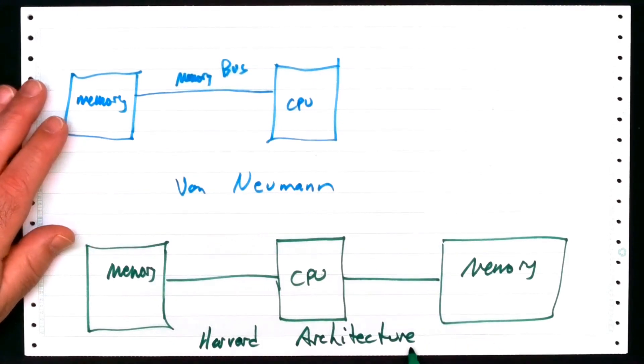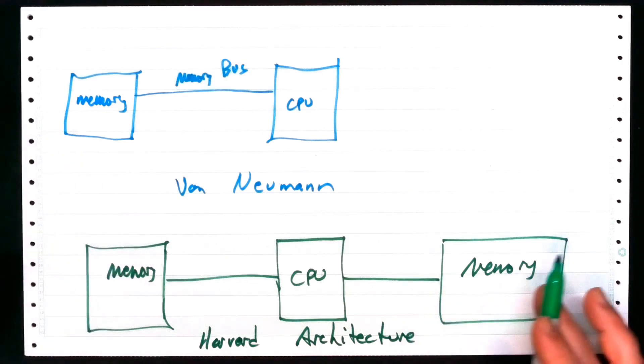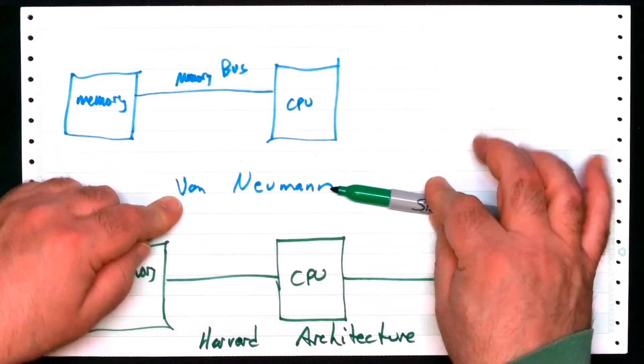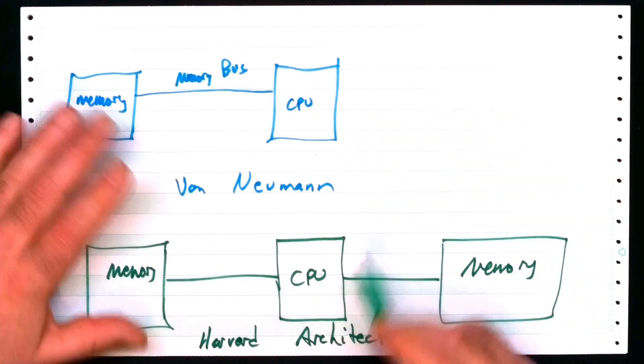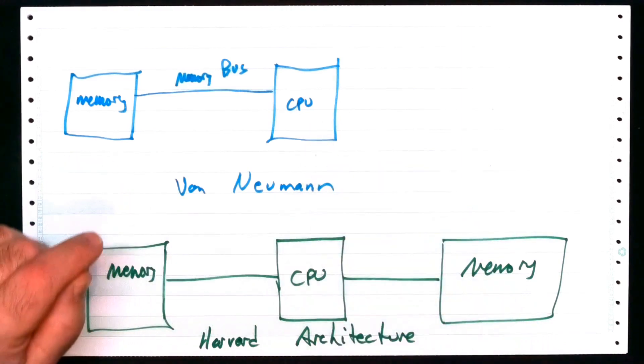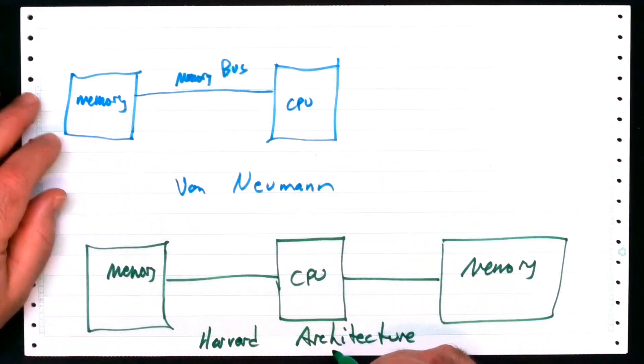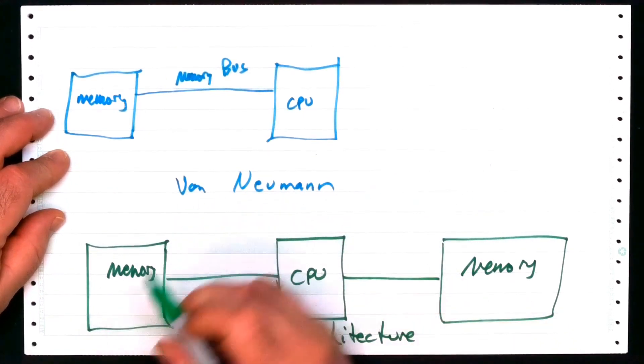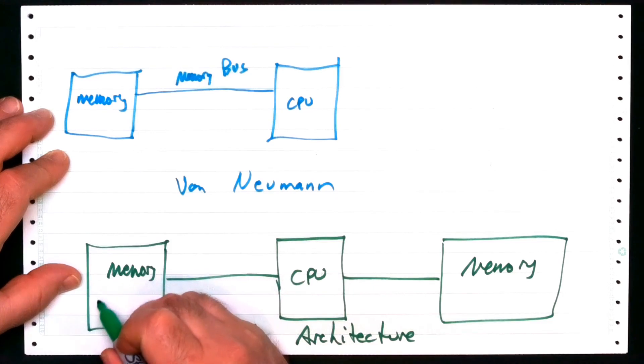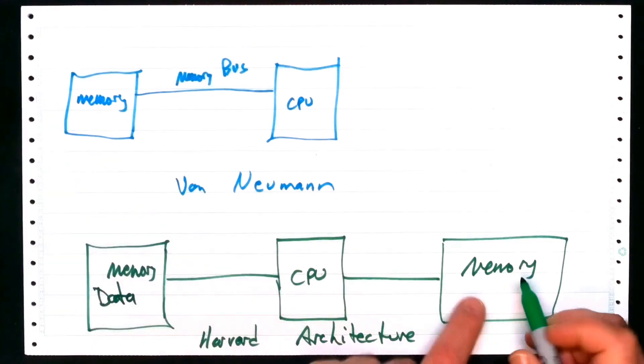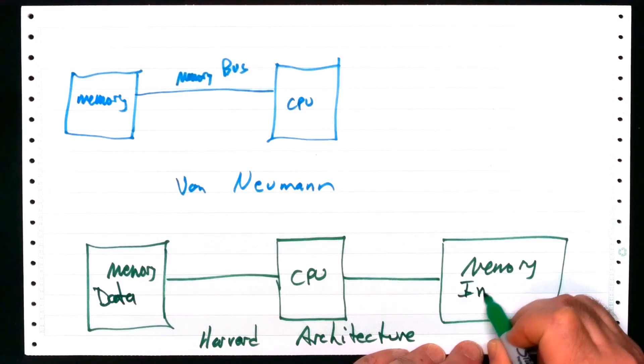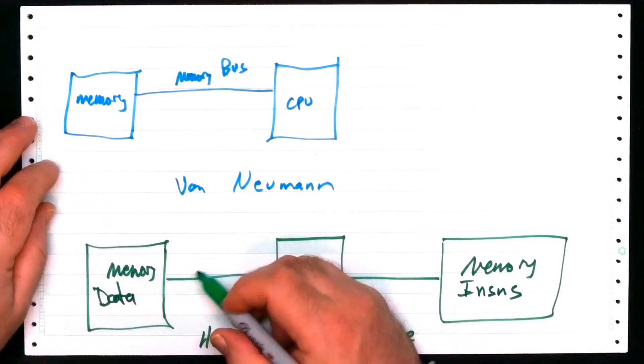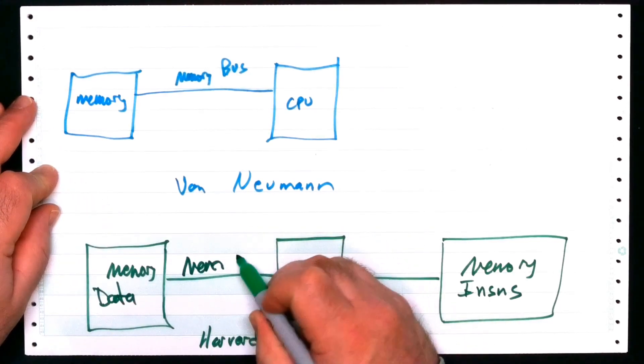This is what we call a Harvard architecture. Why do I use the word architecture here when they really mean organization? I don't know. But if you Google it, that's what this is. And this is going to be the von Neumann architecture up there. Now, what's the difference between these two? Well, obviously, this one has two memories, that one has one. But they're a little more subtle than that. This memory, specifically, is intended to hold data. And the memory over here is intended specifically to hold instructions. I'll abbreviate the word like this.